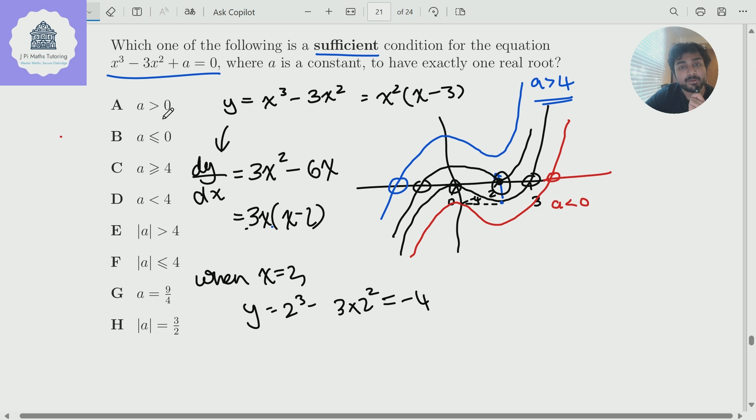then that means that whenever A is positive, this cubic will have one real solution. But that would then also imply that C is true, i.e. C would be a sufficient condition. Because if it is genuinely true that whenever A is positive, this cubic has one real solution, then that means if A is at least four, because if A is at least four, then ergo it's also positive, that would mean that this cubic would have one real solution. But then that would mean that option C is correct as well. And we can't have two correct answers. So let me just go over that again. If A is correct, then that would mean that C would also have to be correct. But we can't have two correct answers. So option A can't be the correct answer.